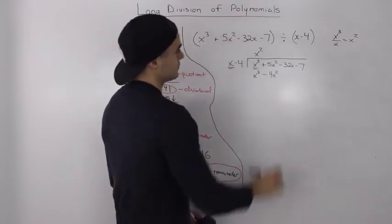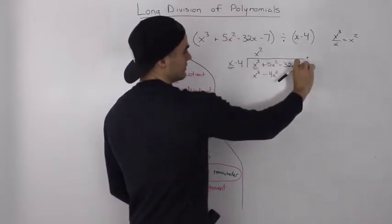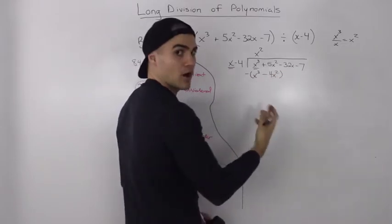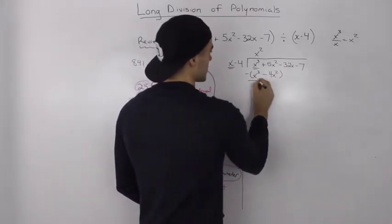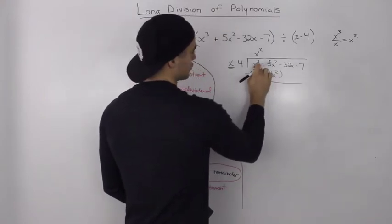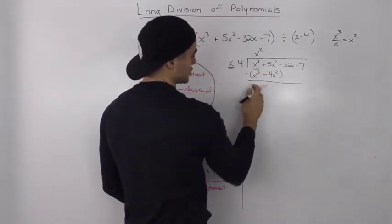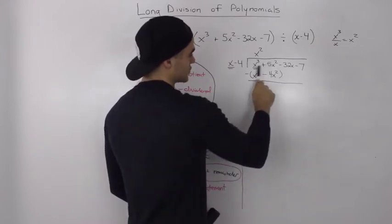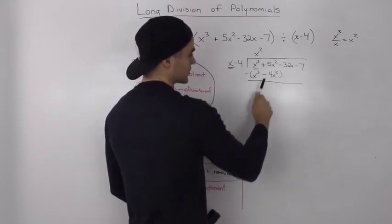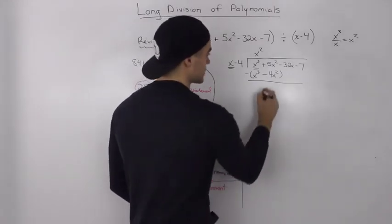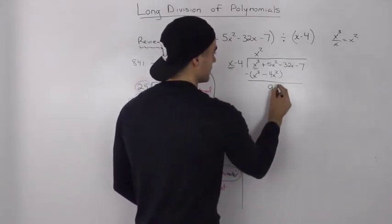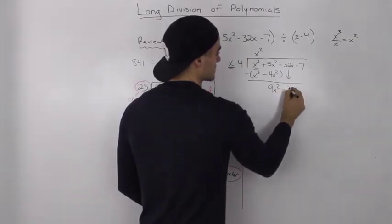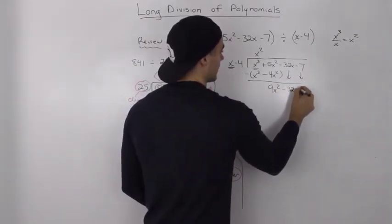Now we take the dividend and subtract this whole new expression. So x cubed minus x cubed is zero — those cancel out. 5x squared minus negative 4x squared is the same as 5x squared plus 4x squared, which gives us 9x squared. Then we bring down the negative 32x and the negative 7.